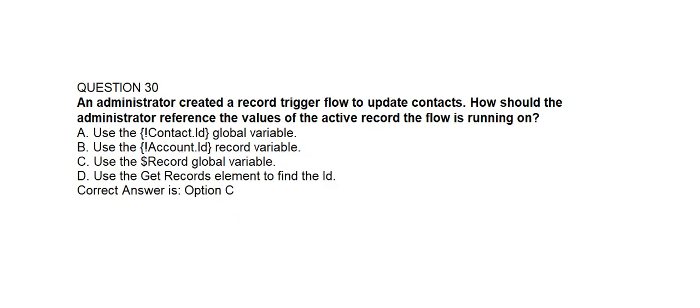Question number 30. An administrator created a record-triggered flow to update contacts. How should the administrator reference the value of the active record the flow is running on?